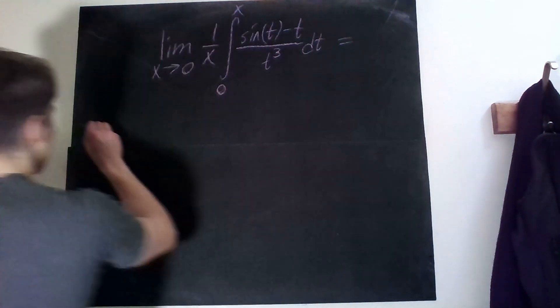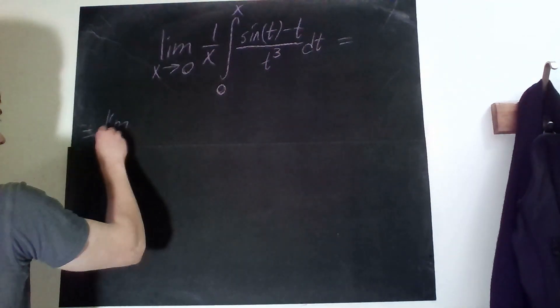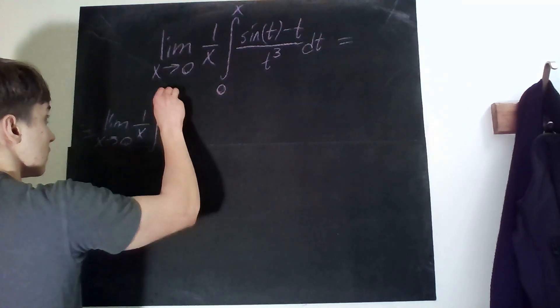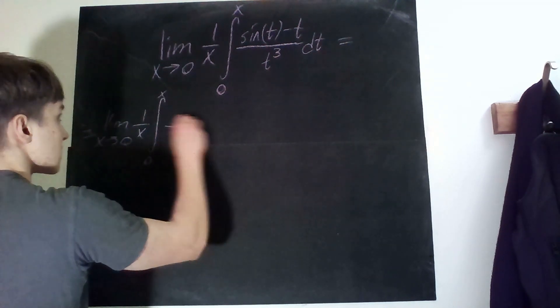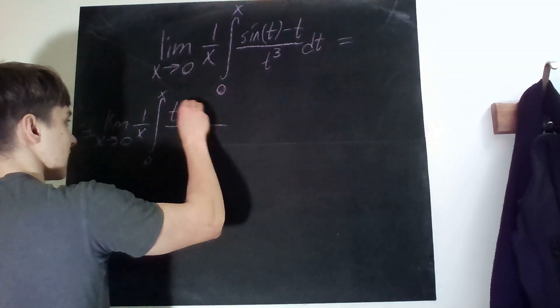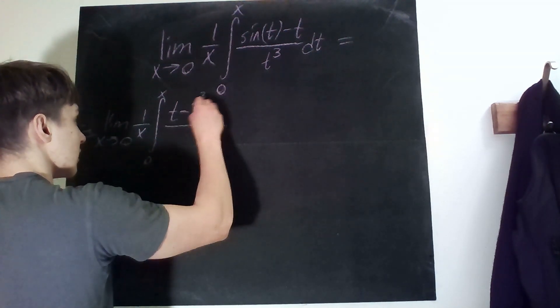I'm gonna rewrite this whole thing as limit as x tends to zero of one over x times the integral of zero to x. The Taylor polynomial of sine is sine t minus t³ over 3 factorial plus t⁵ over 5 factorial and plus some big O term of t⁷.